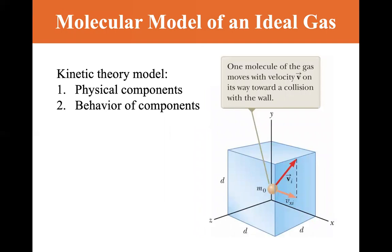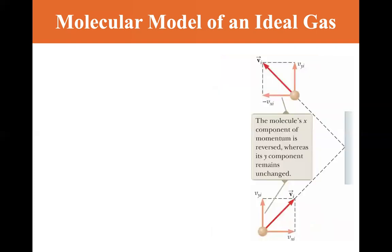The number of molecules in the gas is large and the average separation between them is large compared with their dimensions, so each molecule occupies a negligible volume of the container — consistent with the ideal gas model. The behavior assumptions are: molecules obey Newton's laws of motion, but their motion as a whole is isotropic, meaning they appear the same from any direction. Molecules interact only through short-range forces during elastic collisions, and they make elastic collisions with the walls of the container and with each other.